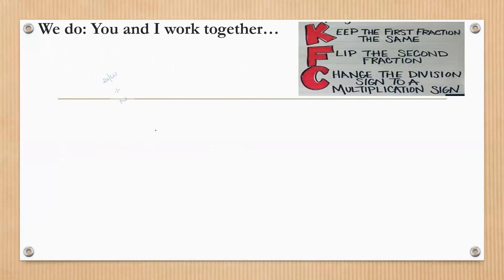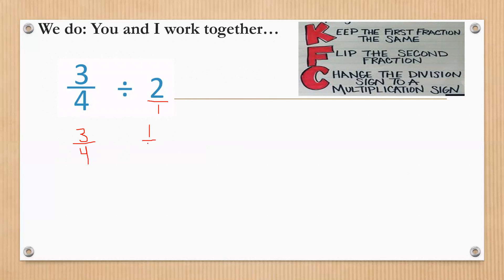Now with whole numbers: put a line under it and a 1 underneath — now we have two fractions. Keep the first fraction, which is 3/4. Flip the second one, which gives us 1 over 2, and change the sign to multiplication. 3 times 1 is 3 and 4 times 2 is 8 — neither can be simplified by a common factor, so our answer is 3/8.